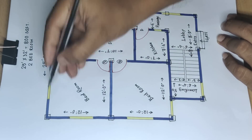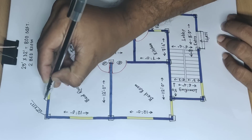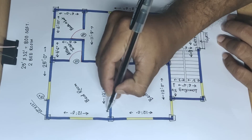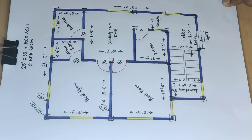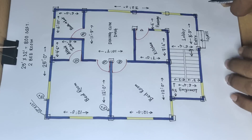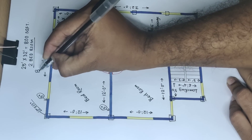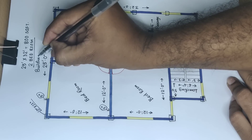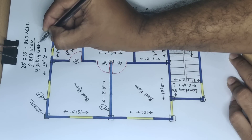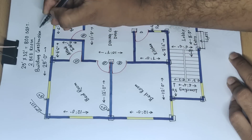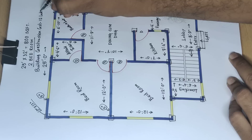Column size 10 inches into 12 inches. Outside wall 5 inches. Total building construction cost — 12 lakhs.